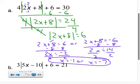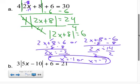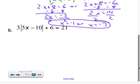Plug in negative 7. 2 times negative 7 is negative 14. So this guy is negative 14 now. Plus 8 is negative 6. The absolute value of negative 6 is positive 6. 6 times 4 is 24, plus 6 is 30. Check. Both solutions check out. We're good to go.